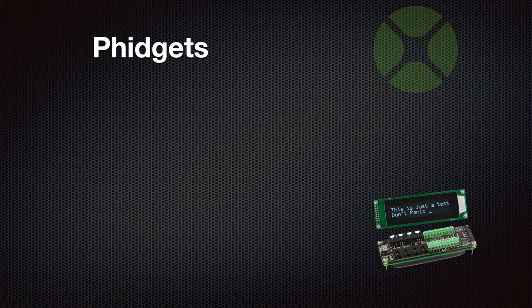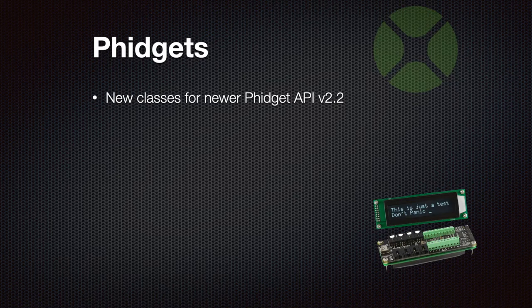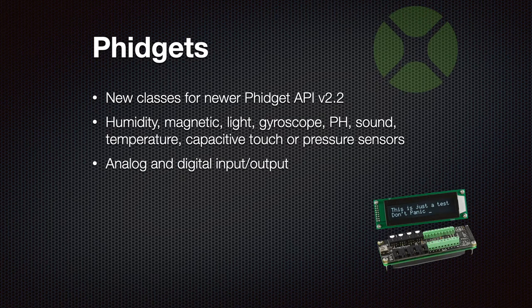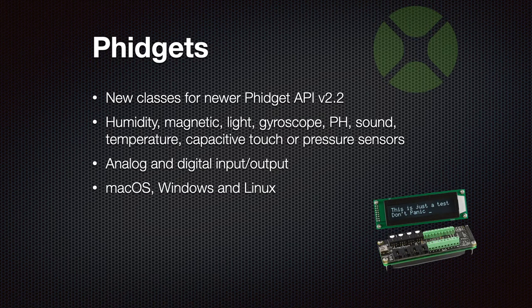The first thing we added this year was an update to our Phidgets classes for the newer Phidgets API 2.2. We've supported Phidgets classes for over 10 years now. With those classes you can work with all those little devices offered by the Phidgets company, including a lot of sensors for humidity, light, magnetic direction, the gyroscope, the pH sensor. You can listen for noise, measure temperature, get capacitive touch pressure, and measure pressure in general. You can also control analog and digital output and input. All this works on macOS, Windows, and Linux.